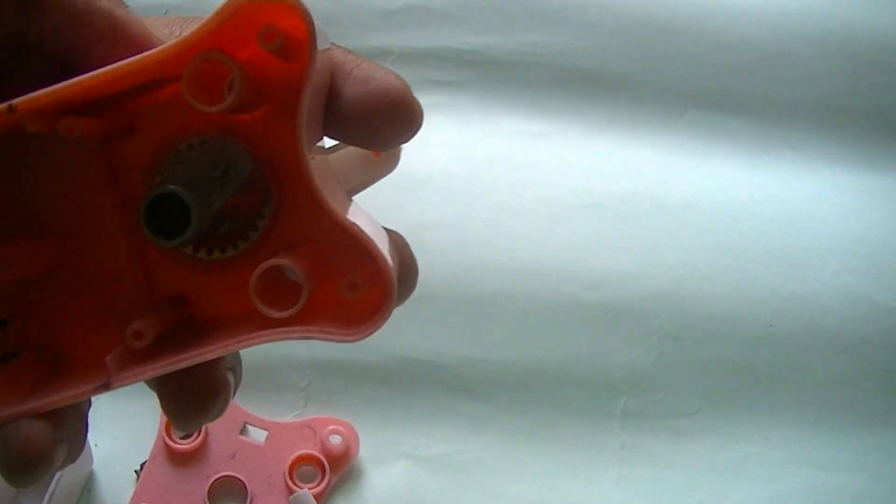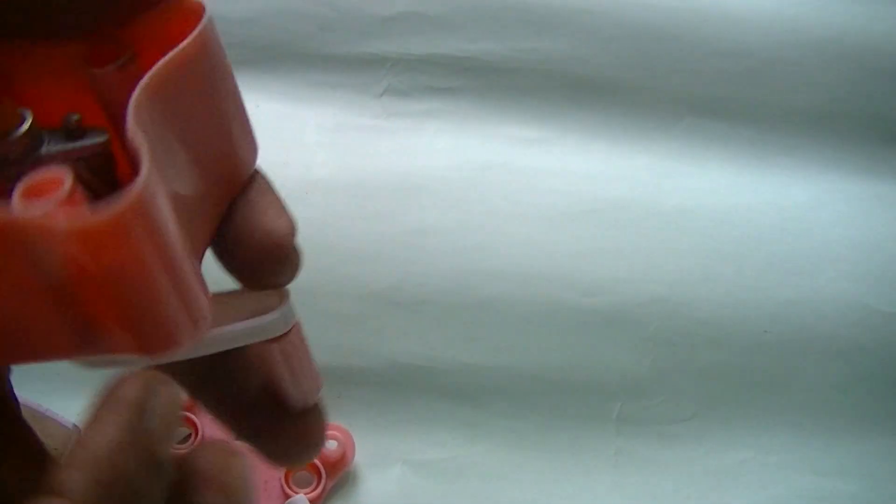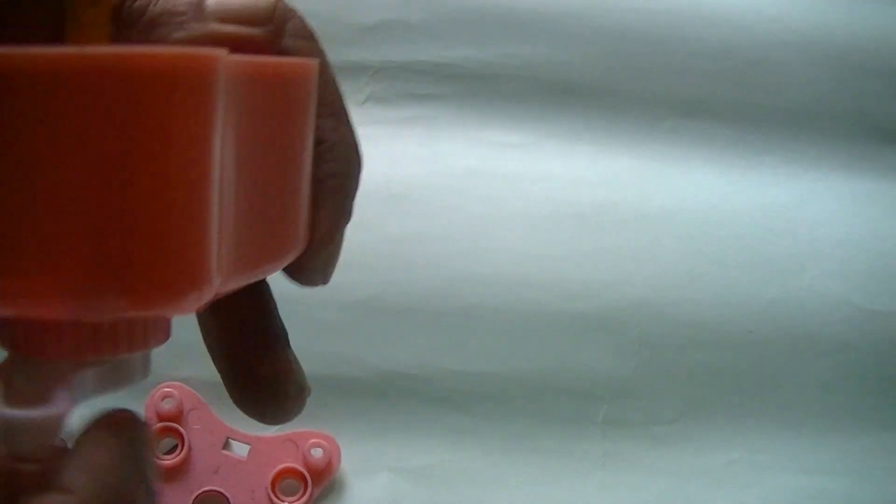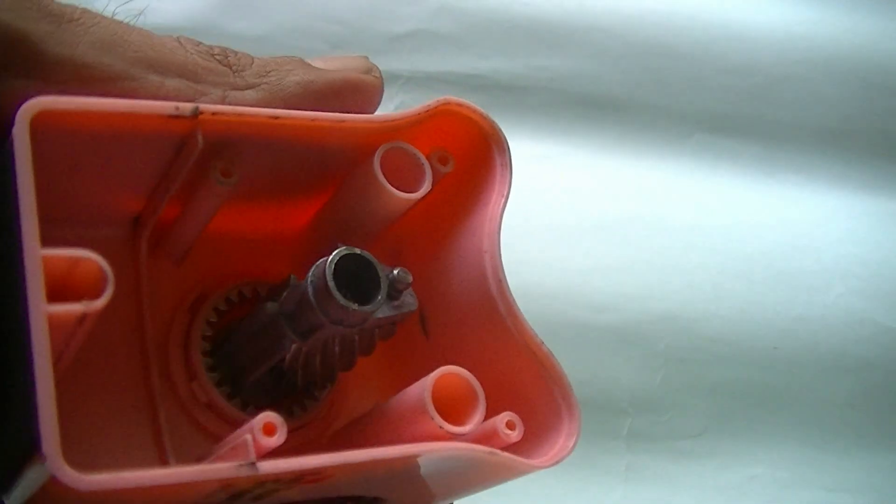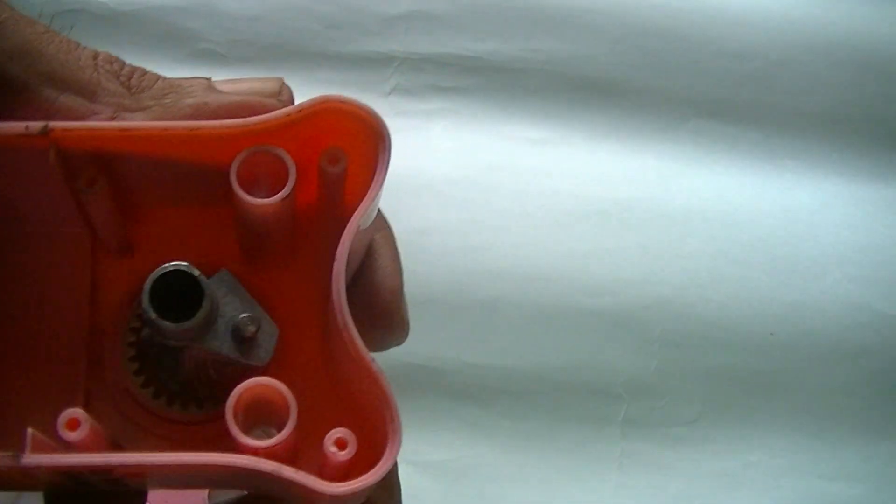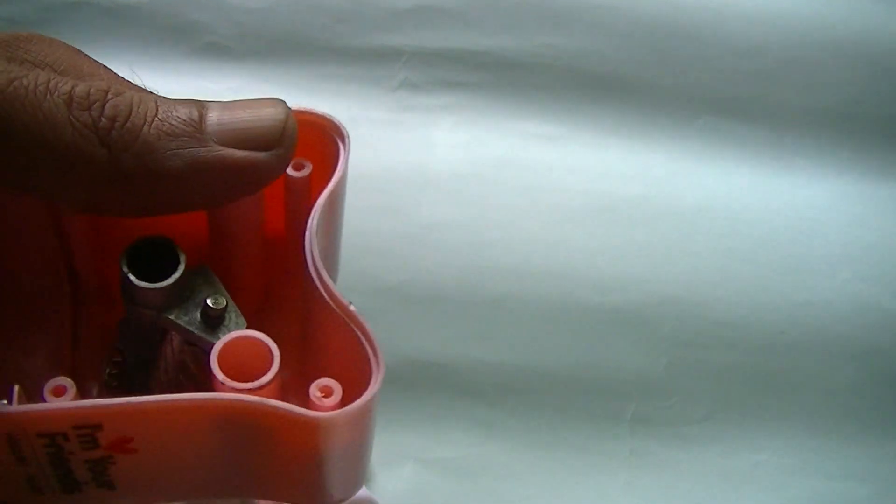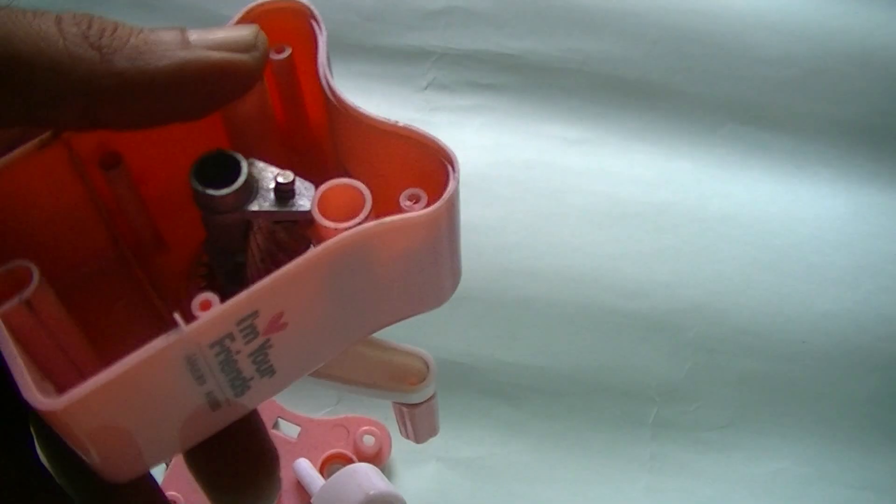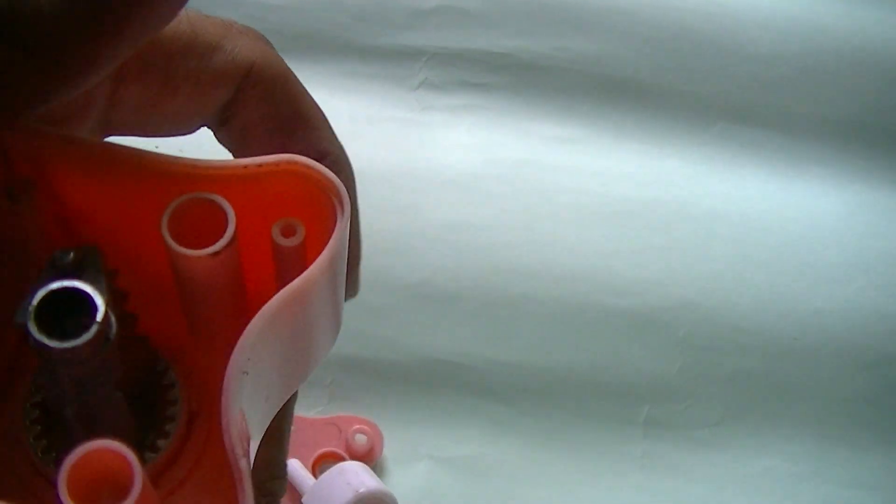When you insert a pencil, how does it sharpen? You remove this lever. What happens? See carefully, there is a gear here. And there's a sharpener, actually a rotating cylindrical sharpener. It keeps rotating.